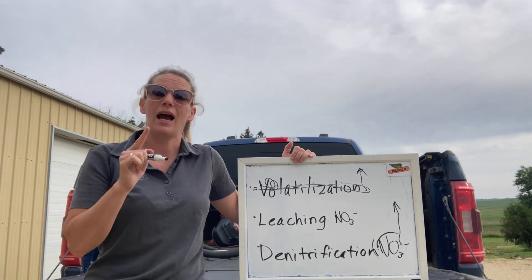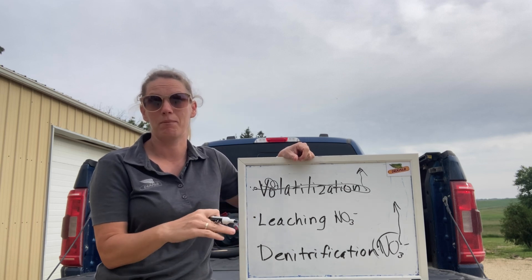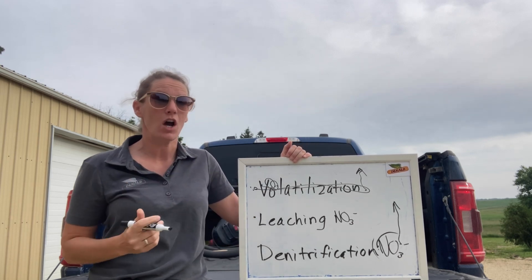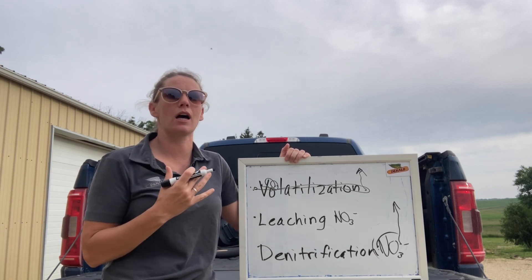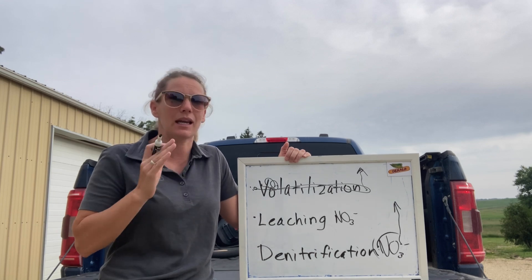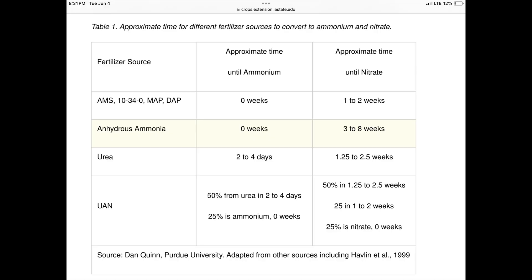So now the question is: how do we know or how can we estimate how much of this nitrogen is gone? Iowa State did a really nice three-part series on exactly this, and I want to walk you through some of the calculations or ways that we can estimate nitrogen loss. Making these estimates is all about time and form — specifically what form did you put on and how long ago, because we're trying to figure out how much nitrate we have lost. Here is a chart showing the different forms of nitrogen and how long it takes each to become nitrate.